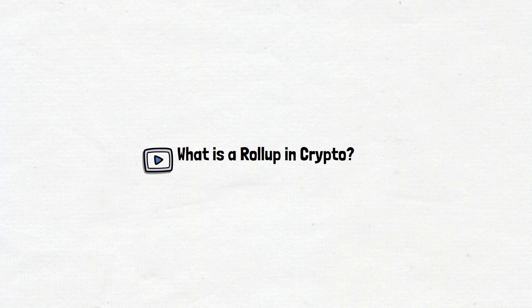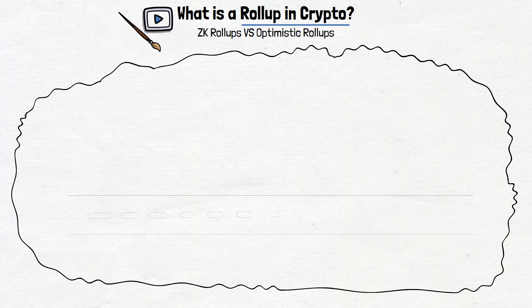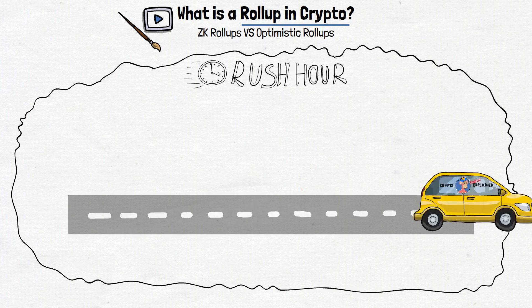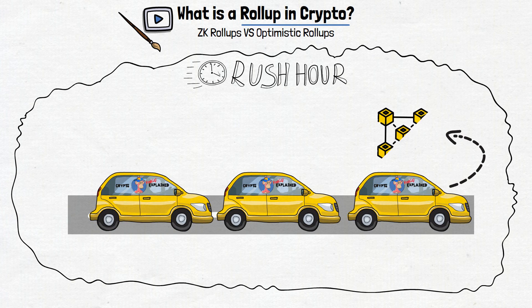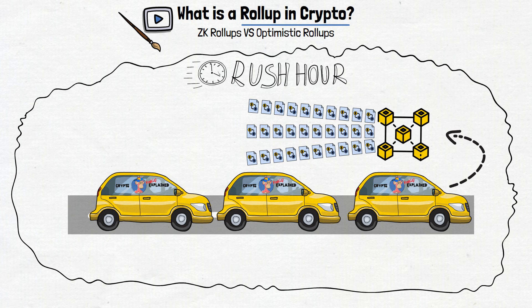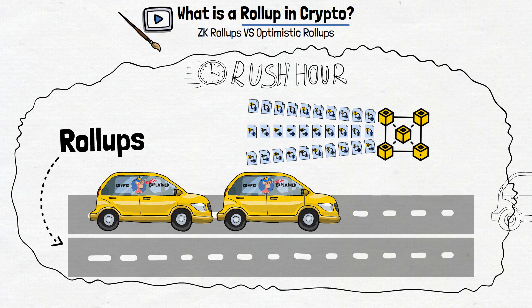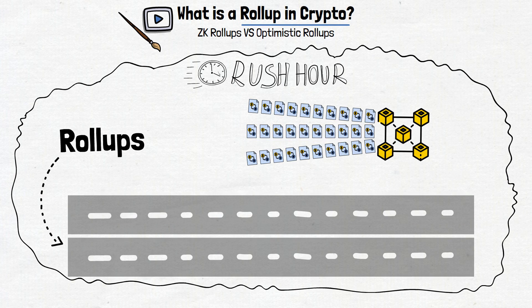Hey there! In today's video, we're going to learn what is a rollup in crypto and understand different rollup types. Imagine a bustling highway during rush hour, cars zipping by, horns blaring, and suddenly traffic comes to a standstill. That's a lot like what happens in the world of blockchains when too many transactions occur at the same time. Rollups come in as alternative routes or extra lanes, allowing a smooth flow of traffic without the chaos. So, what is a rollup in crypto, and why is this concept a game-changer?